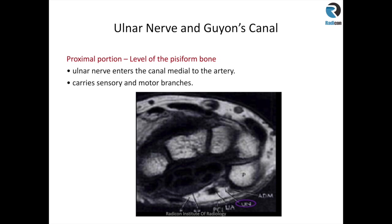At the level of the pisiform bone, which is the proximal part, the ulnar nerve sits medial to the artery — so the ulnar nerve is here, just hugging the pisiform bone, and the ulnar artery is more on the lateral side. It's a very narrow space, so even a small ganglion can easily cause ulnar neuropathy.